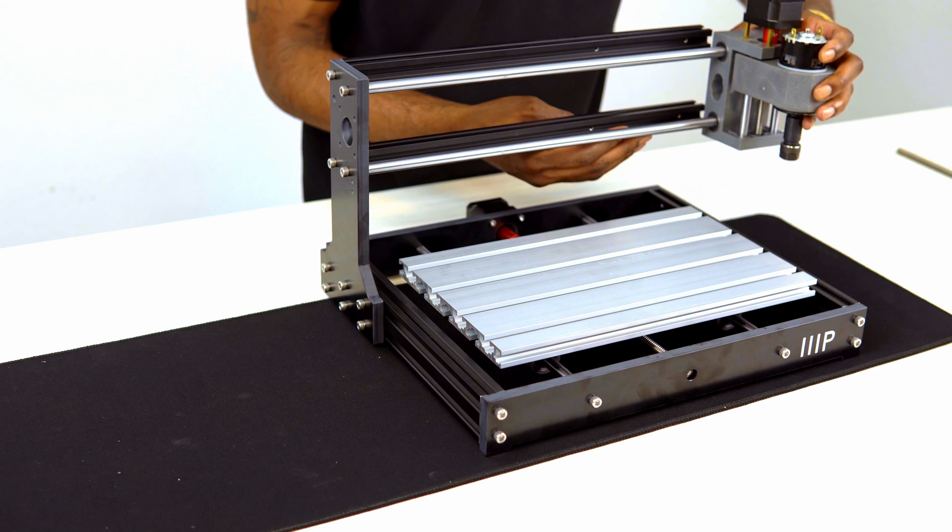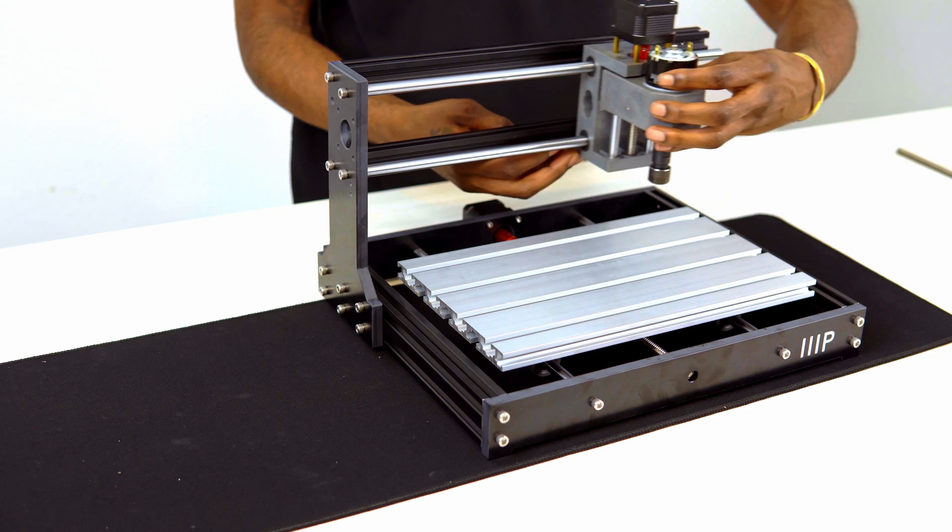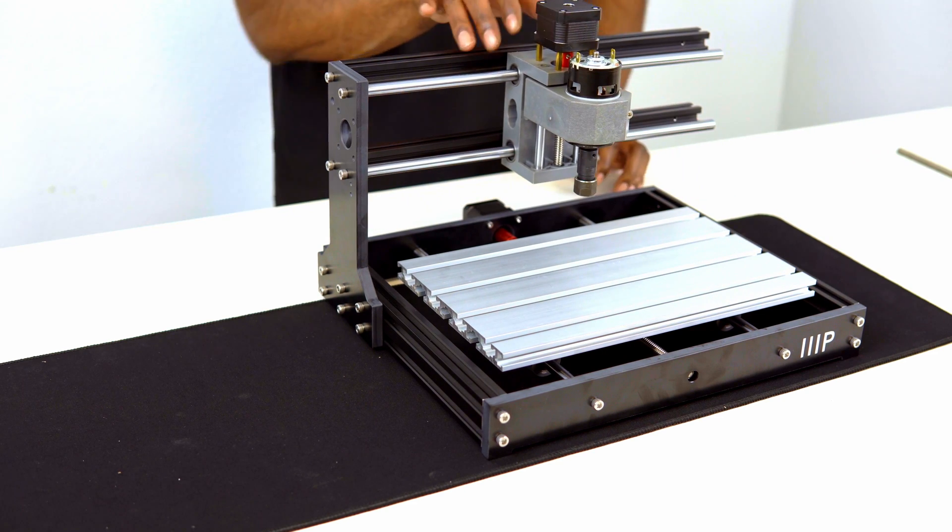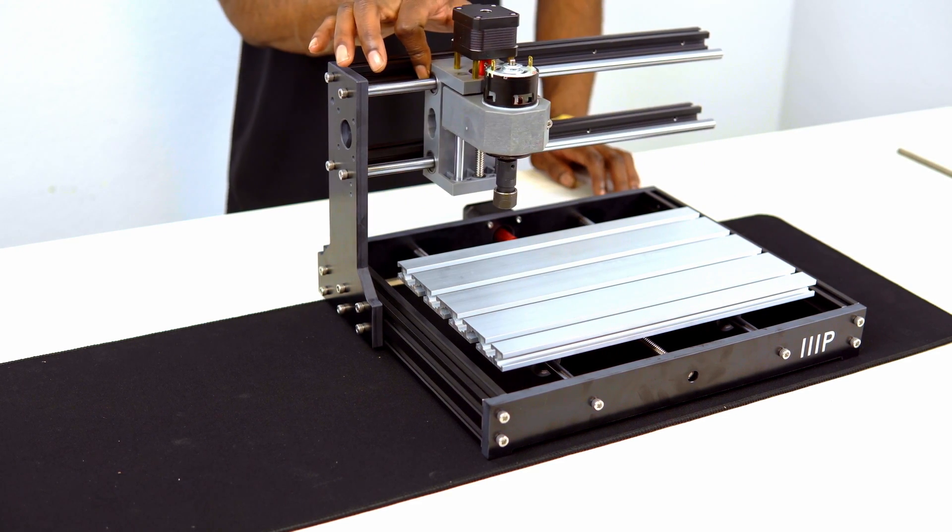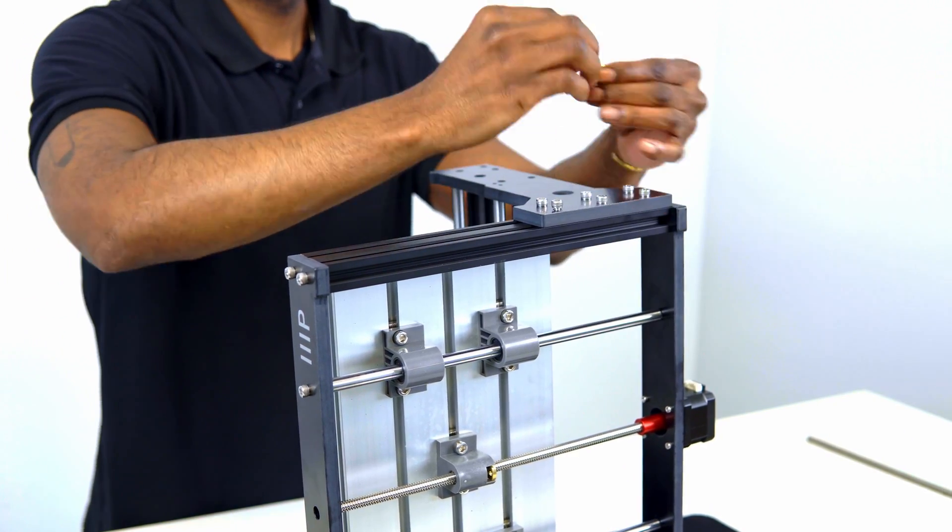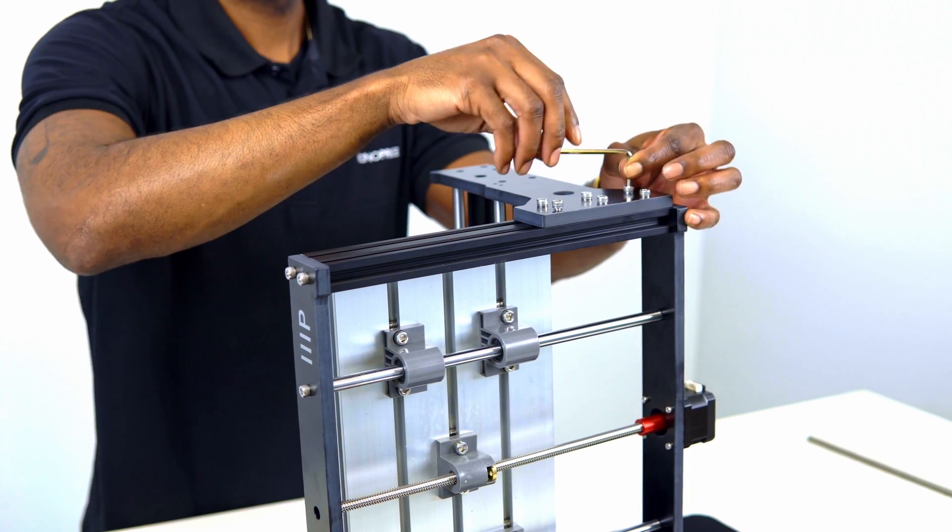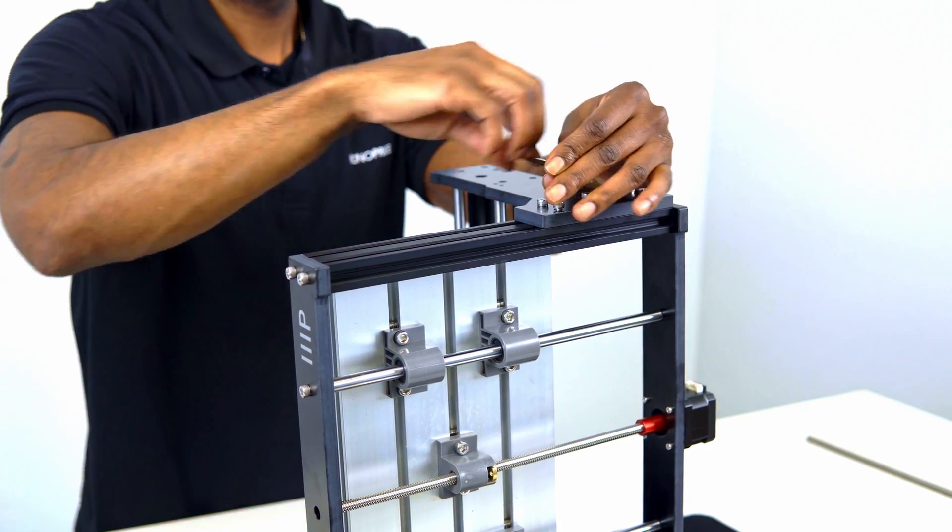Let's take our z-axis module now and insert it onto the two guide rods and ensure that the module is able to move freely. Once that's done, let's grab the right plate and position it so that the horn on the top of the plate faces the front of the unit, and attach it to the assembly using six M5 by 25 screws.